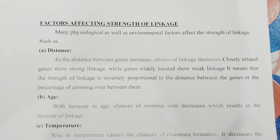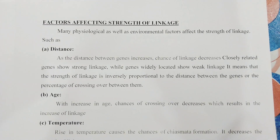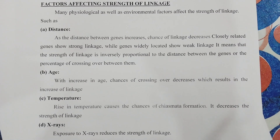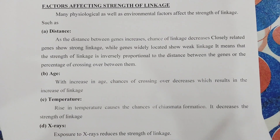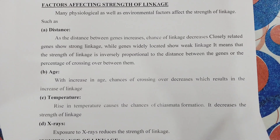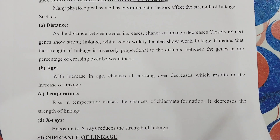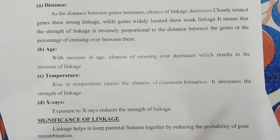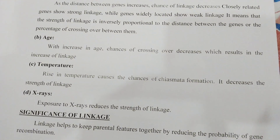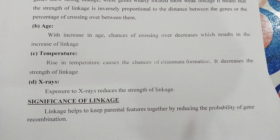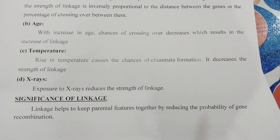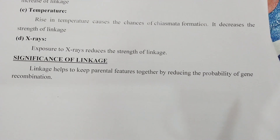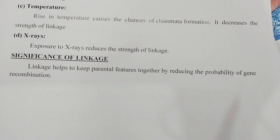Let's see the factors affecting linkage. Many physiological and environmental factors affect the strength of linkage. First, distance: as the distance between two genes increases, the chance of linkage decreases — closely located genes show strong linkage while widely located genes show weak linkage. Distance and linkage are inversely proportional. With increase in age, chances of crossing over decrease. Rise in temperature causes increased chiasma formation, decreasing the strength of linkage. Exposure to X-rays also reduces the strength of linkage.